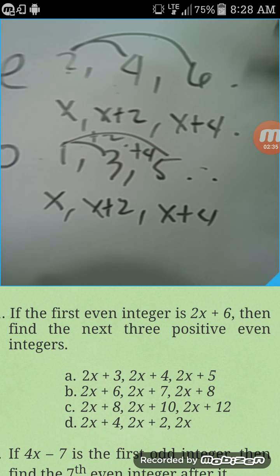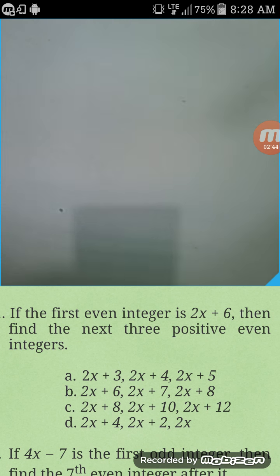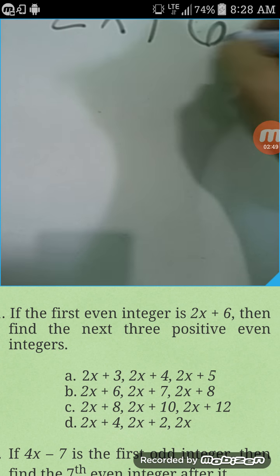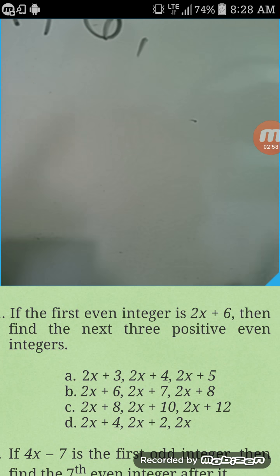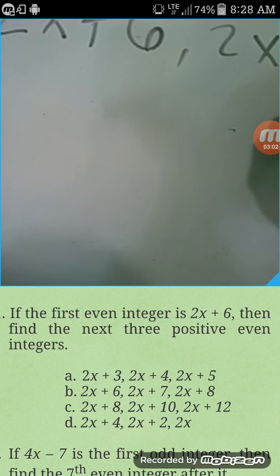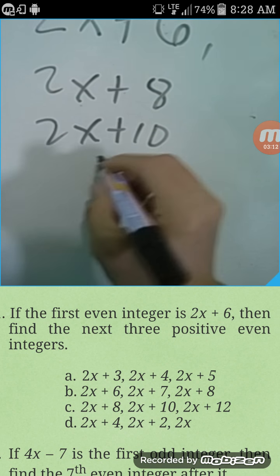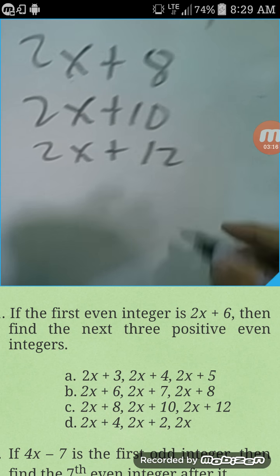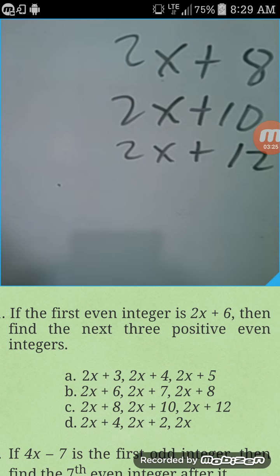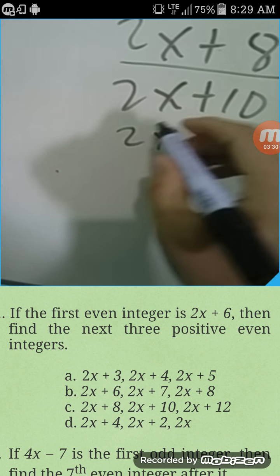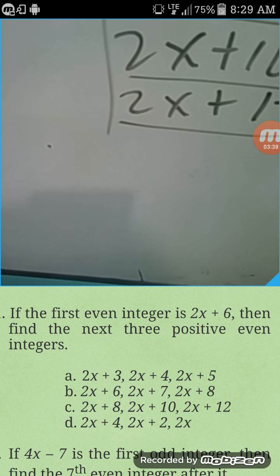In this case, the first integer is already given as 2x plus 6, and we just need to find the next three positive even integers. Since it's an even integer, we always add 2. So the next would be 2x plus 8, then 2x plus 10, then 2x plus 12. So the three answers are 2x plus 8, 2x plus 10, and 2x plus 12 — that is letter C.